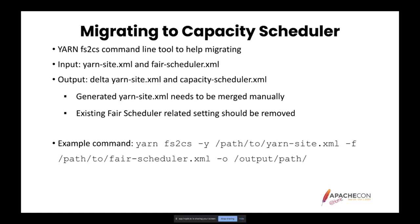FS2CS is a command application invoked by using the yarn-fs2cs command with various command-line arguments. The tool expects YarnSite.xml and FairScheduler.xml allocations file as input and generates a new YarnSite.xml and CapacityScheduler-specific settings. Manual copy-paste is required to the existing in-use YarnSite.xml as part of the migration, meaning FAIR Scheduler-specific settings will be left in place after the migration.